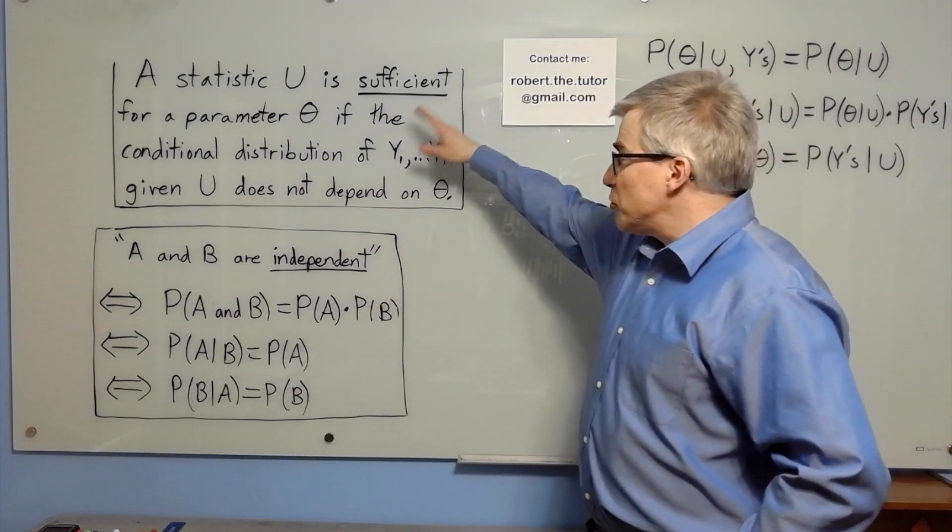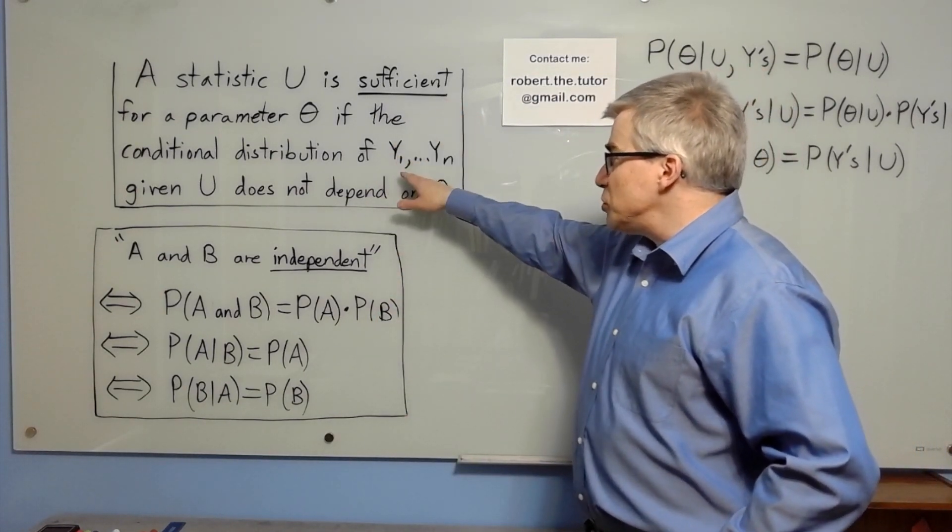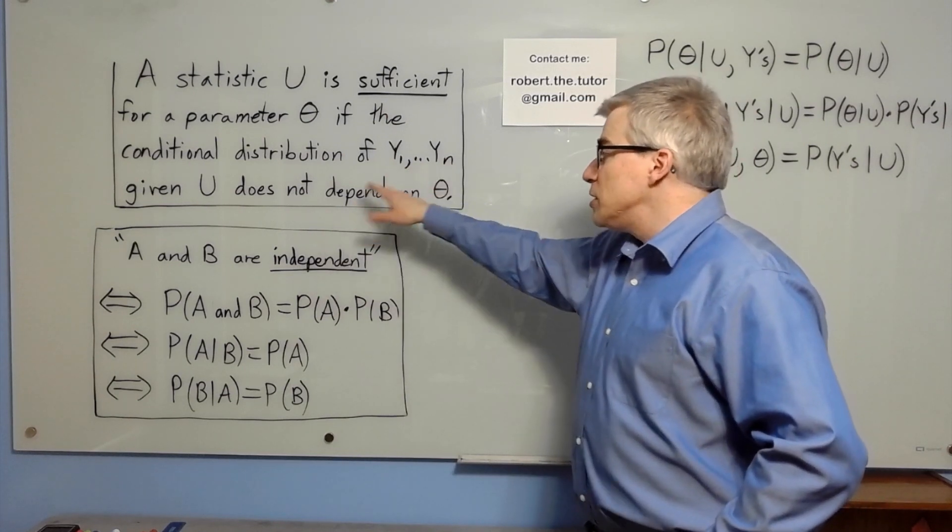A statistic U is sufficient for a parameter theta if the conditional distribution of the data given U does not depend on theta.